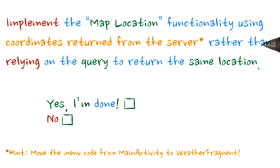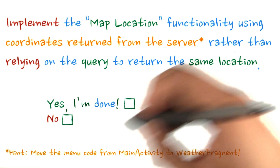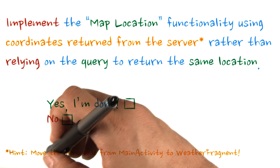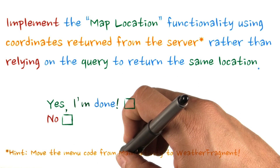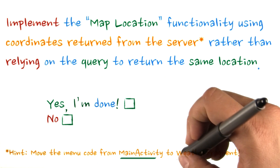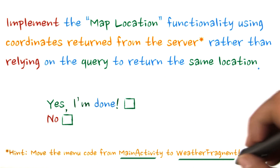Implement maps using the coordinates stored in the location table. You'll want to start by moving the menu code from main activity to weather fragment.